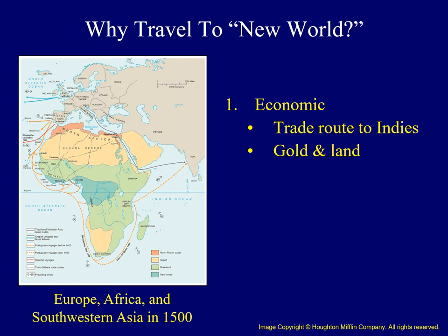Some were looking for shorter trade routes to the East, as Europeans wanted easier access to goods from Africa and Asia, such as cinnamon, nutmeg, and sugar, to add spice to their bland diet. However, they also sought access to silk and jewels. In addition, many others sought gold and other precious metals, as well as land for expansion of their empires.